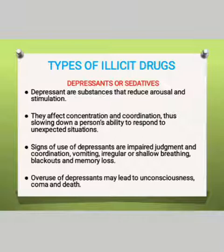Another important type of illicit drugs found in our communities are called depressants or sedatives. Depressants are substances that reduce arousal or stimulation, and when taken they interfere with people's concentration as well as coordination. Signs include impaired judgment and coordination, vomiting, shallow breathing, blackouts, and memory loss. However, when overdosed, individuals can become unconscious, some develop coma, and others die as a result of the use of these drugs.